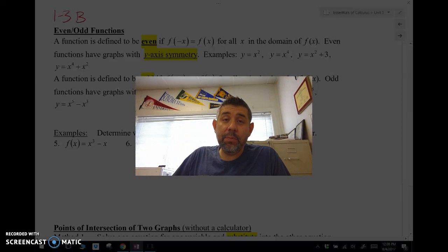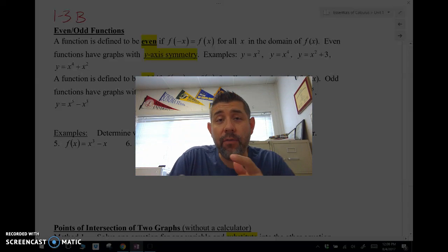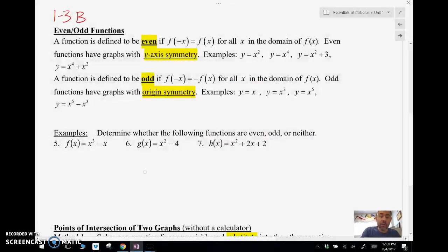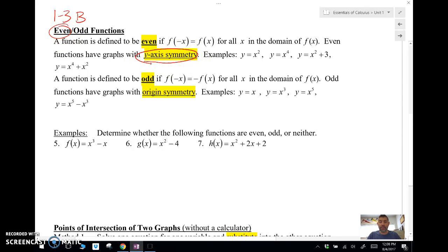Alright, here we go guys, 1-3B: even and odd functions. An even and an odd function, they're not really even and odds like twos and threes and things like that, but an even function is something that's symmetric about the y-axis. We can determine if something is an even function by using the formal definitions.